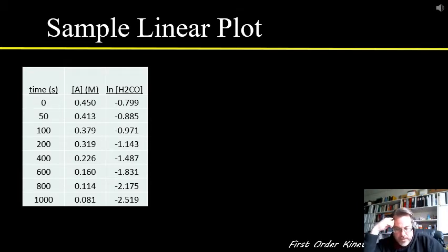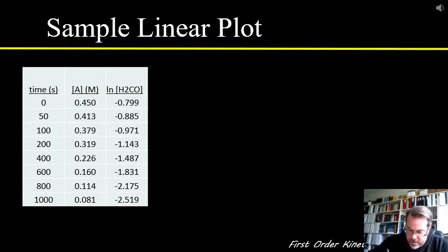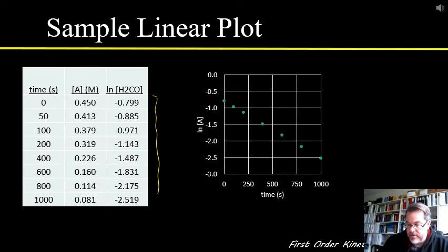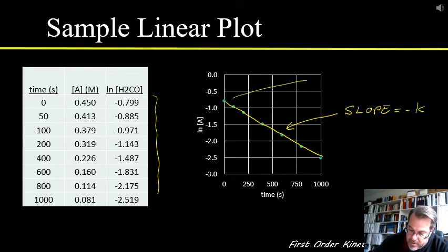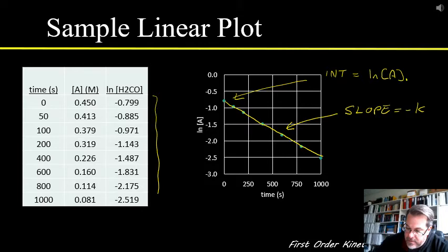Once you've calculated the log of all the different concentrations, you put them into a table and you should have something that looks about like that. Then if we plot all of these, we get a nice linear graph and we can connect all of our data points and see that we get a nice straight line. The slope is the negative value of k, and the intercept is the natural log of the initial concentration.